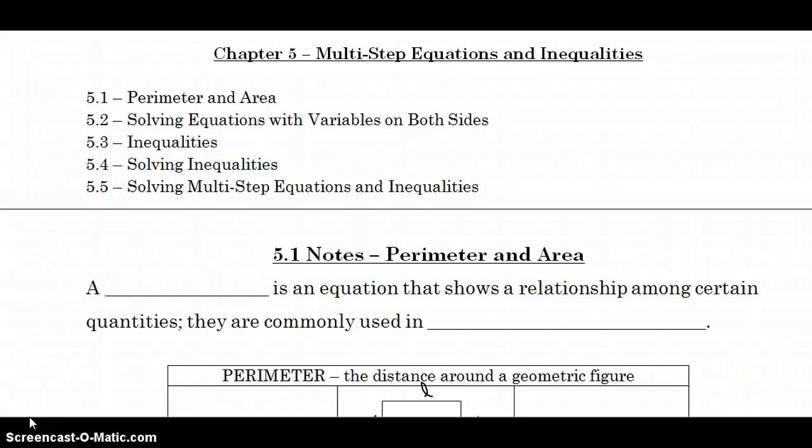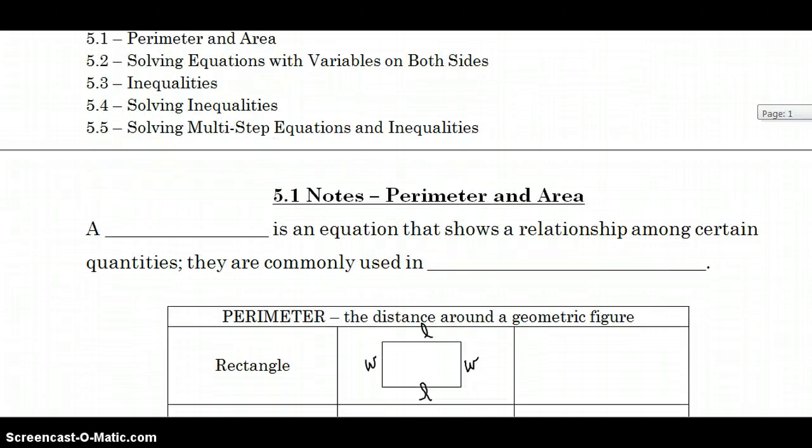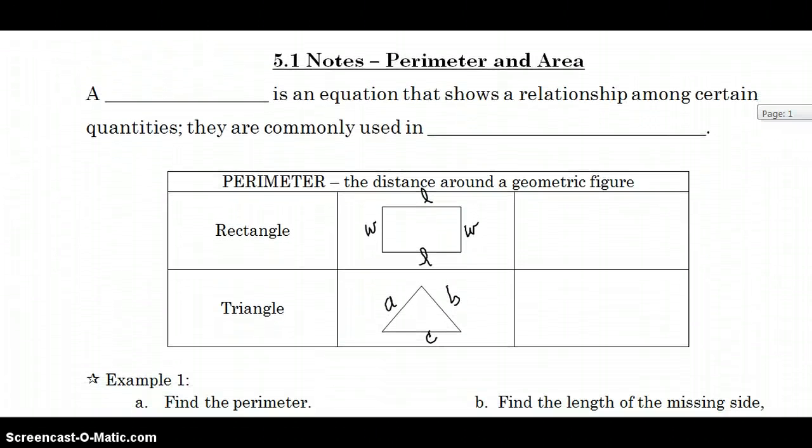Hello, pre-algebra students. We're ready to start Chapter 5. I have here highlighted the main key concepts in Chapter 5 that we're going to be studying. Starting in Section 1, hopefully this is a review talking about perimeter and area of geometric shapes.